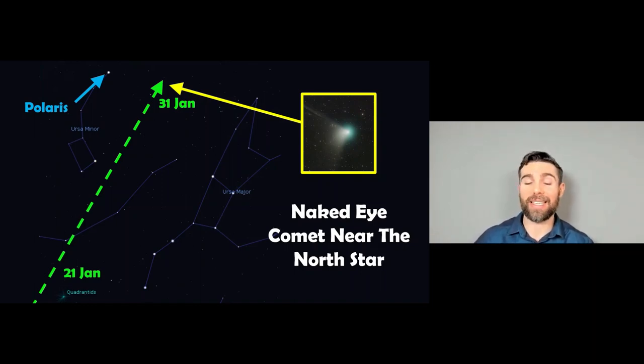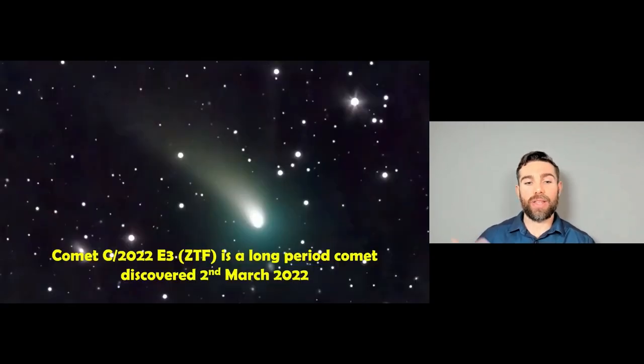So this comet is called C2022E3, and it was discovered in March or 2nd of March 2022, so almost a year ago now. And it's actually a long period comet. So it's come from the furthest reaches of our solar system, from the Oort cloud.